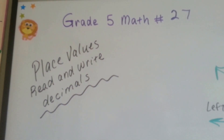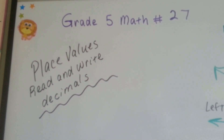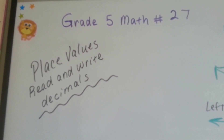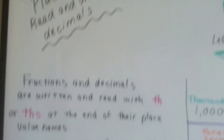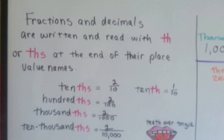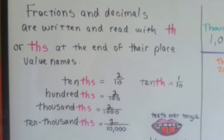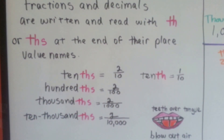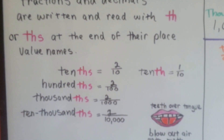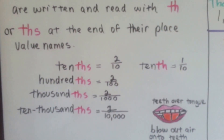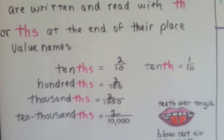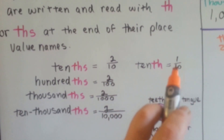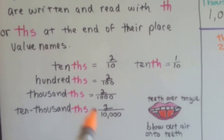Grade 5 math, number 27: place values — read and write decimals. Fractions and decimals are written and read with a 'th' or 'ths' at the end of their place value names. One-tenth is singular, so there's no s — it's just one-tenth.